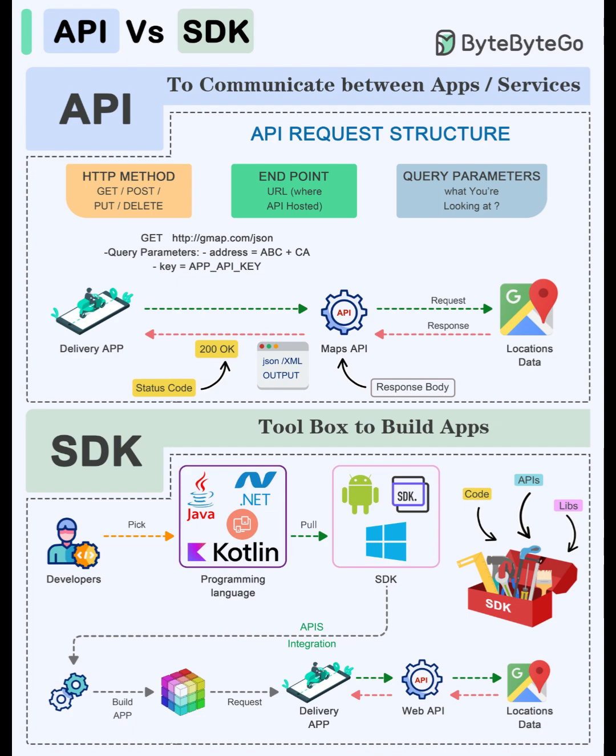API: lightweight, universal, maximum control. SDK: faster delivery, opinionated, platform-specific. Many teams start with the SDK, then drop to raw APIs for special performance or customization needs. Next time docs list both, decide by constraints, environment, speed, and maintenance. If this clarified the fog, like, subscribe, and drop the next concept to demystify in the comments.